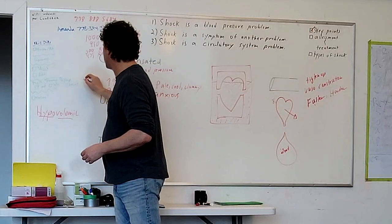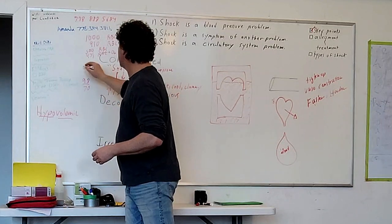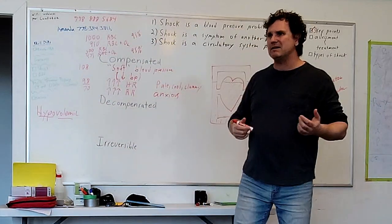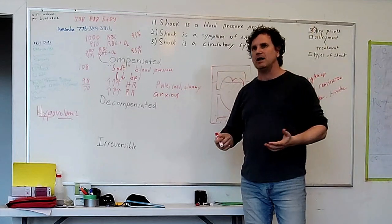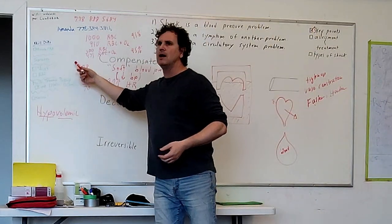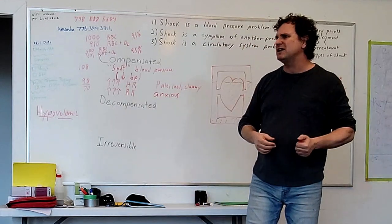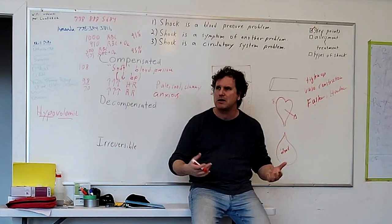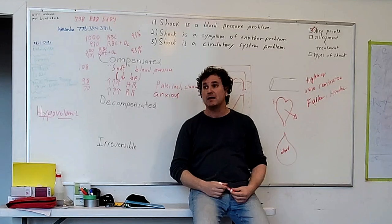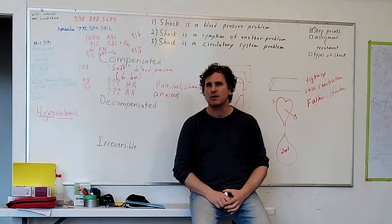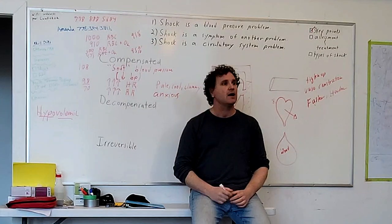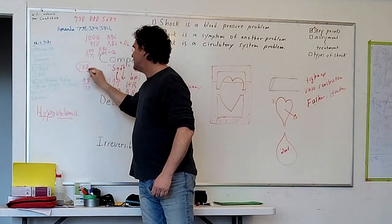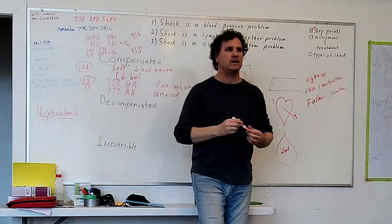These signs can be super subtle — you may have a blood pressure of 98 over 70 and a heart rate of 108. In an anxious person you'd expect the heart rate to be a little high anyway. This kind of thing is really easy to miss. A good rule for identifying shock: if the heart rate is higher than the systolic blood pressure, treat them for shock.